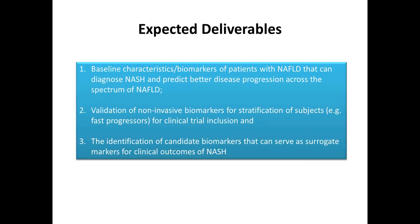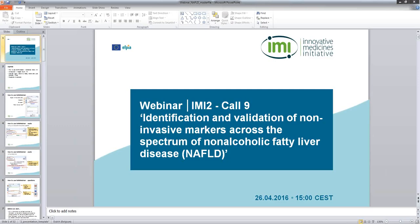What do we expect to get out of it? Number one on the list is baseline characteristics of biomarkers of patients with NAFLD that will allow us to diagnose NASH and better predict disease progression across the spectrum. We expect to validate non-invasive biomarkers for clinical trial inclusion, and we are ultimately looking for the identification of candidate biomarkers that will serve as surrogate biomarkers for clinical outcomes of NASH.